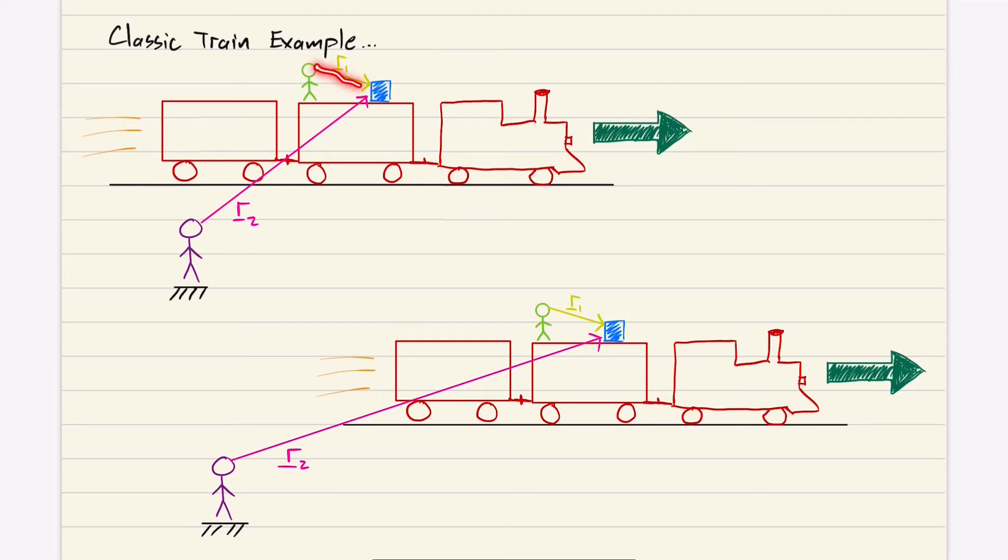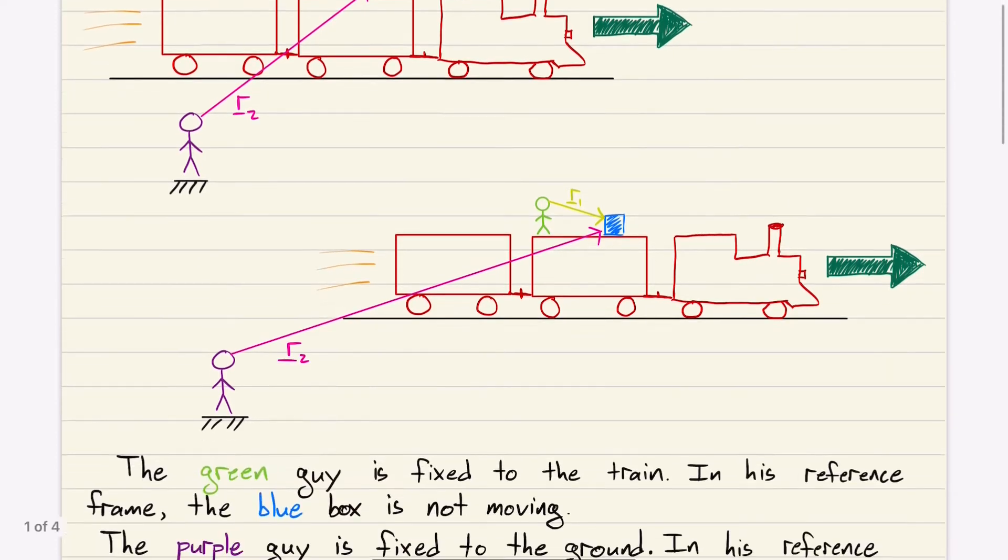This box is not moving in the green guy's frame of reference. However, the purple guy is standing next to the train on the ground, fixed to the ground, watching this train speed by. The blue box is going to appear to be moving away from this purple guy.